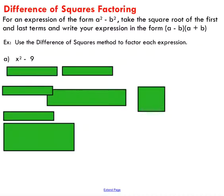So difference of squares factoring. For an expression of this form, your expression must look like this. This looks much different than the trinomials that we factored in the previous video lesson. Notice there's only two terms and there's a subtraction sign in between. What we're going to do is take the square root of the first and the last term and write your expression in this form. All of our solutions today will look like this — you're going to have two binomials.